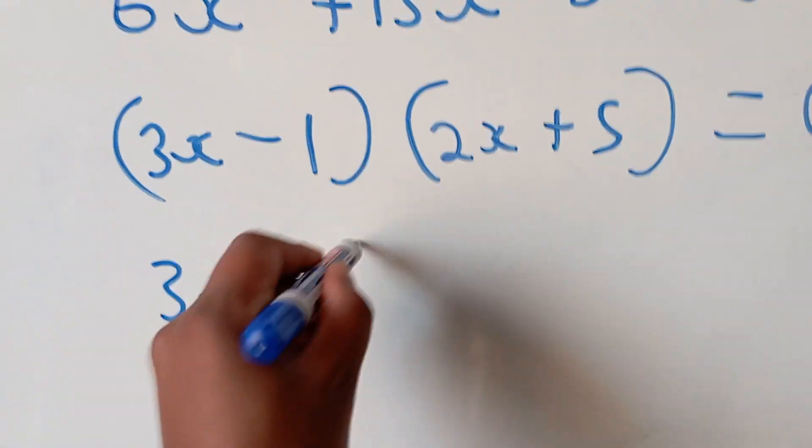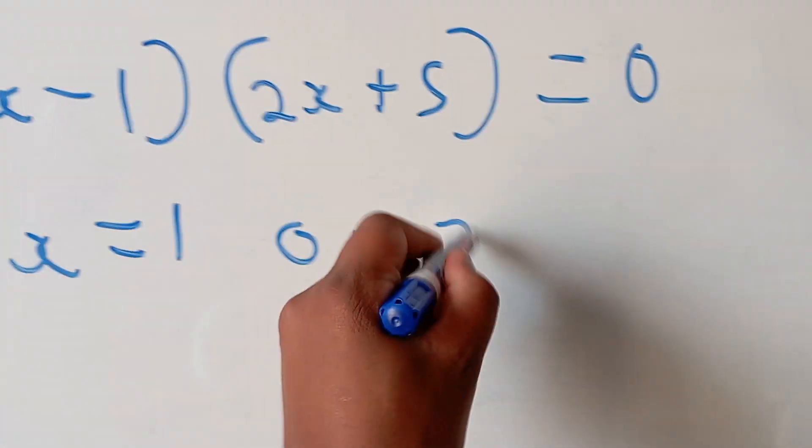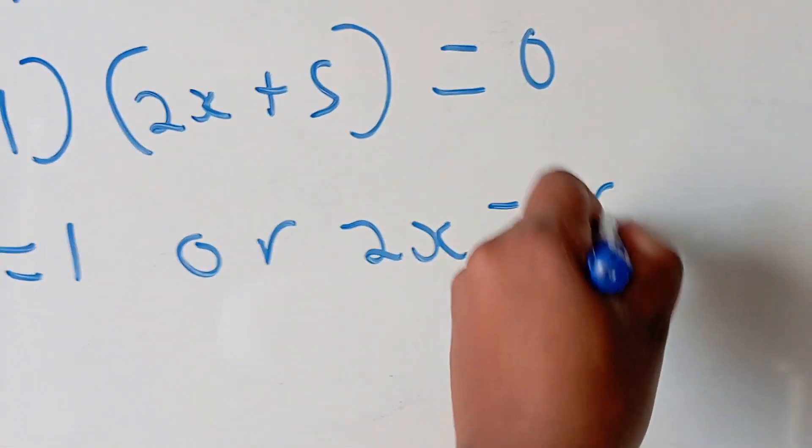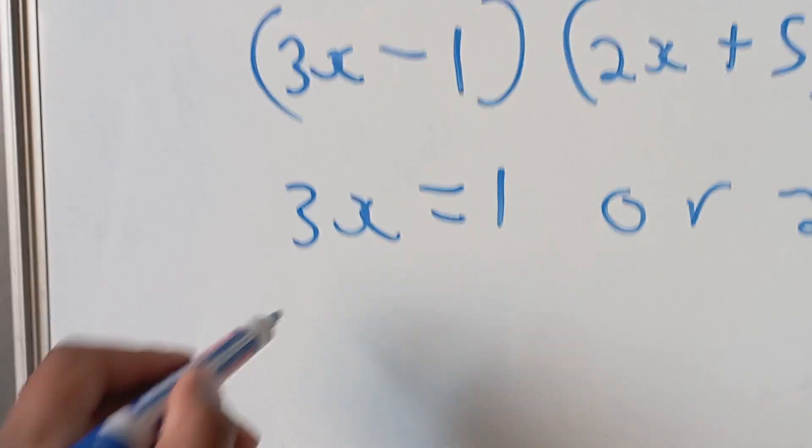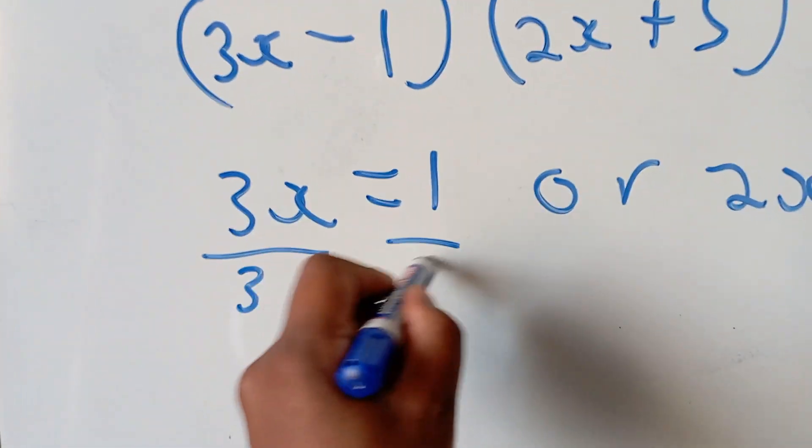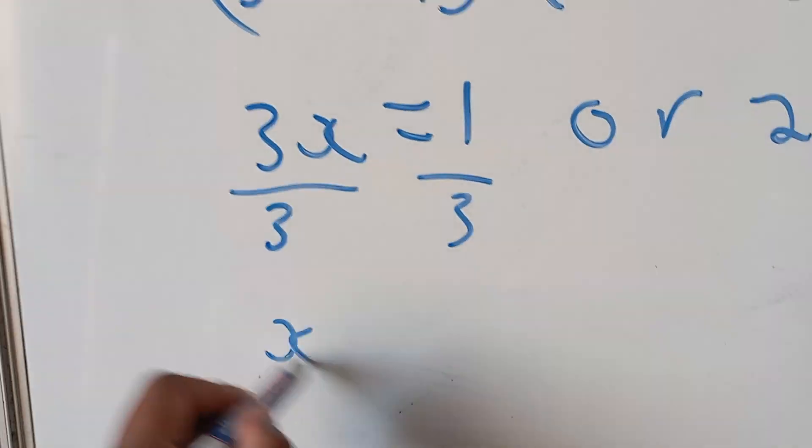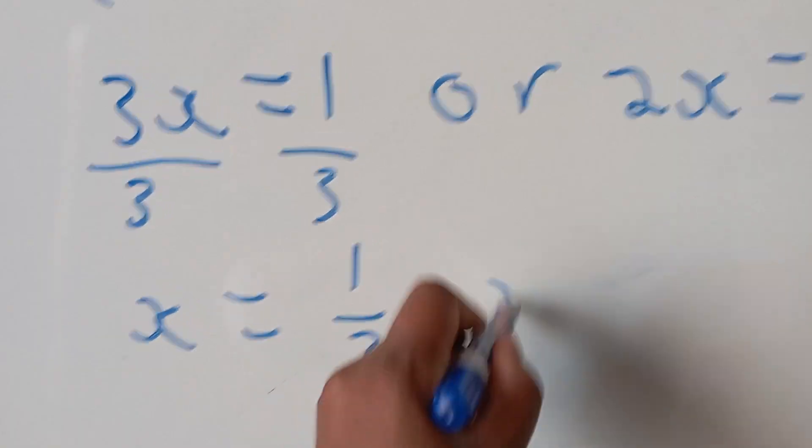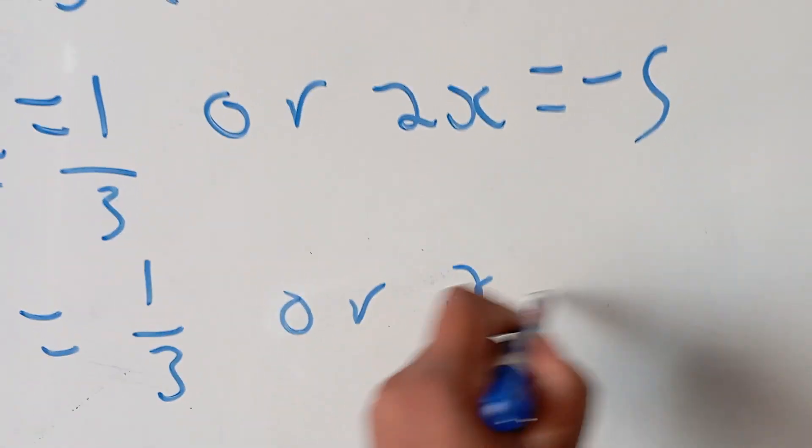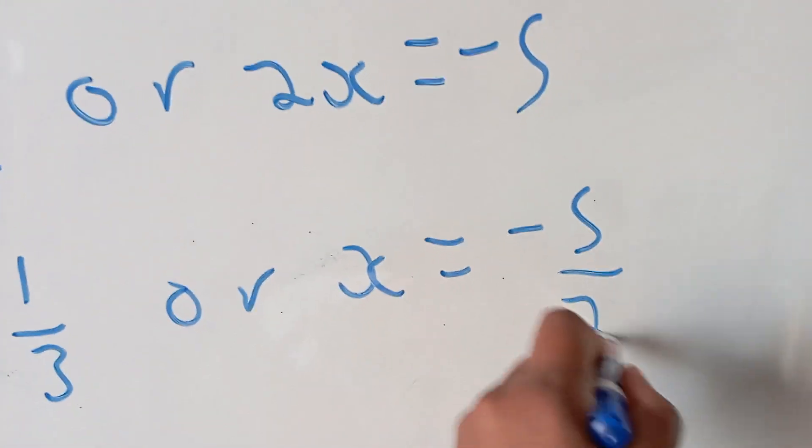Therefore, your 3x is equal to 1 or 2x is equal to negative 5. And then when you have it like this, then you divide by 3, divide by 3, then your x is equal to 1 over 3, or x is equal to minus 5 over 2.